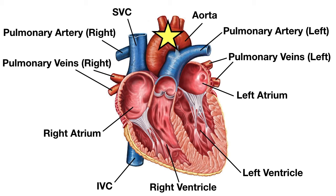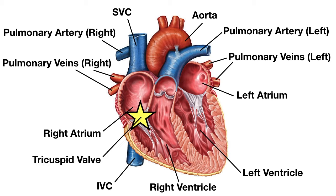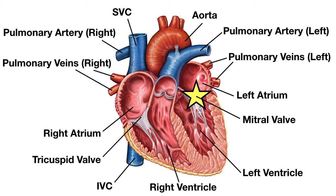Now let's go over the four main valves. The valve between the right atrium and the right ventricle is the tricuspid valve. Its function is to prevent backflow of blood from the right ventricle to the right atrium during systole when the right ventricle is pumping blood forward into the pulmonary arteries. On the left side, between the left atrium and left ventricle, is the mitral valve or bicuspid valve. Its function is to prevent backflow from the left ventricle to the left atrium during systole when the left ventricle pumps blood into the aorta. Remember: 'try it before you buy it.'